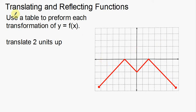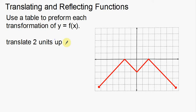What I'm going to do is use a table to perform each transformation. I'm going to have two examples. This first one, I'm going to translate two units up. And in another example, I'm actually going to do a reflection. So we're going to translate this two units up using a table.